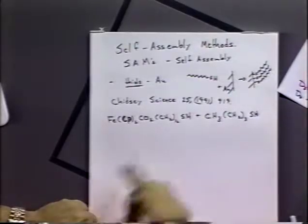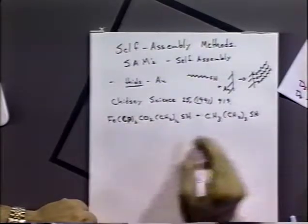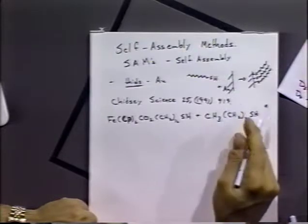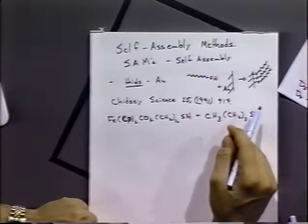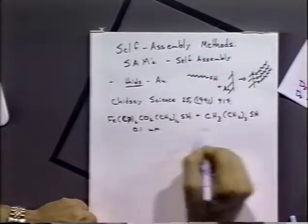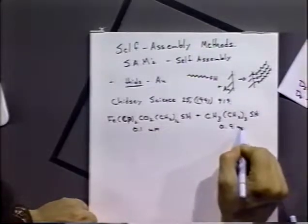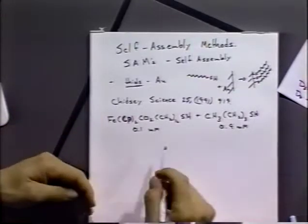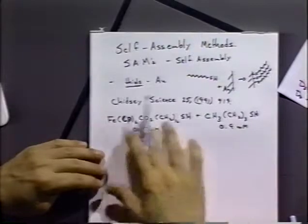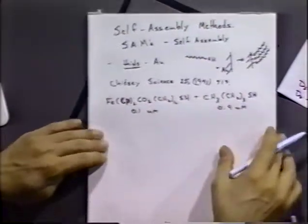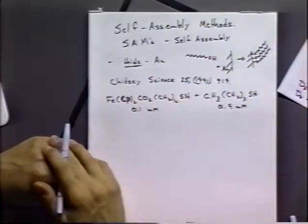So you've got some ferrocene terminated alkane chains, and some non-terminated alkane chains, or just straight alkane chains. And this is 0.1 millimolar. This is 0.9 millimolar. Now if this stuff absorbs in proportion to the solution concentration, we'd see effectively 10% would have ferrocene, and the rest would have this other non-active structure.